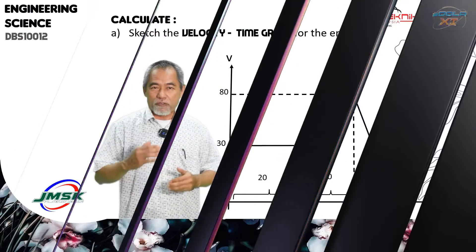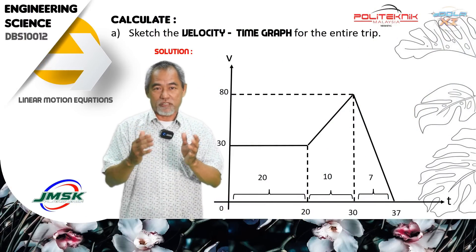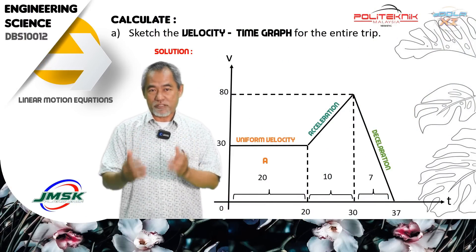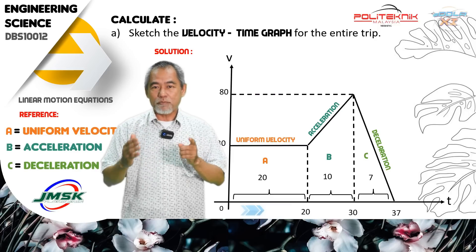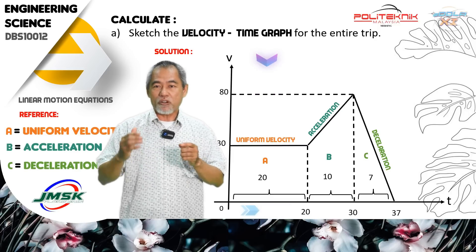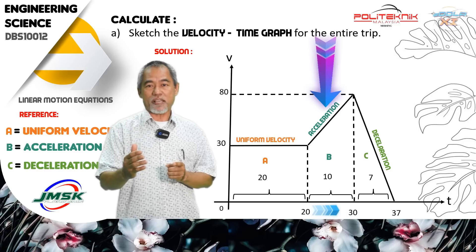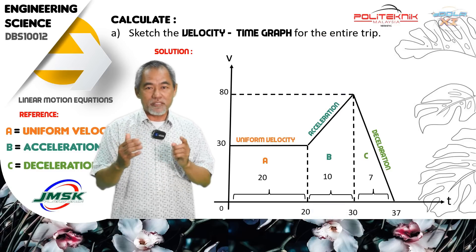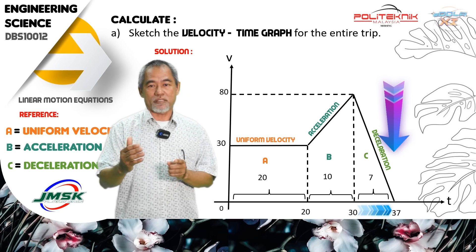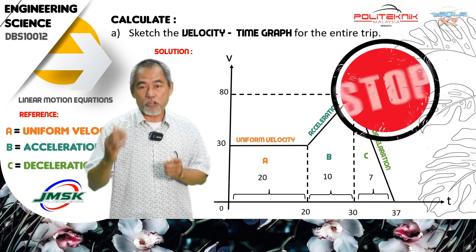From the previous situation, sketch the velocity-time graph for the entire trip. From 0 to 20 seconds, the car moves at a constant speed. From 20 to 30 seconds, the car accelerates. From 30 to 37 seconds, the car decelerates until it stops.